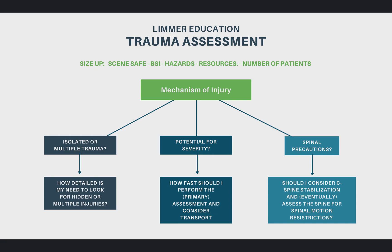If we look at the mechanism of injury, we're going to have a pretty good sense of whether we're going to be going fast or slow, and of course that can change in the primary assessment. And then finally, the mechanism of injury tells us about the need for spinal precautions. Spinal precautions now are spinal motion restriction, but that doesn't mean at this early stage that we're not going to consider C-spine stabilization, eventually a C-collar, and then do some type of assessment for spinal motion restriction as we go on.